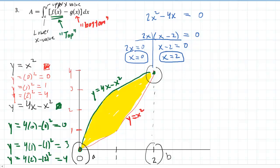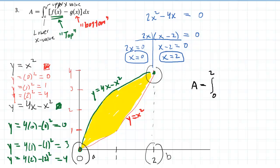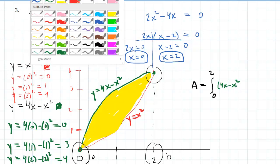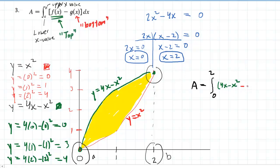So putting this all together into the formula, we're going to have the area of this region is equal to the integral from 0 to 2. And then we have our f of x, which we've said was 4x minus x squared. And then we're going to subtract that by g of x, which again is x squared.